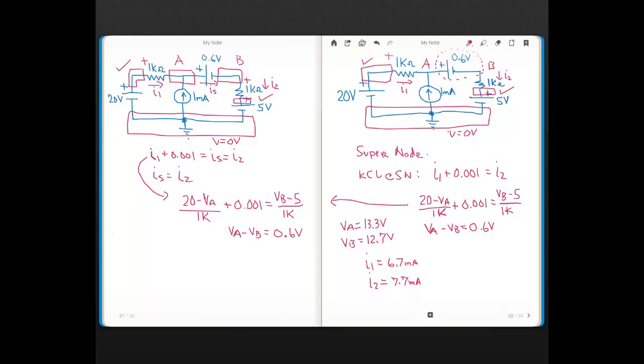So this 0.6 volt source is absorbing power, because the current is entering its higher voltage end, and also this source is absorbing, because current's flowing into the higher voltage end of the 5 volt source. The 20 volt source is supplying power, and this 1 milliamp source is also supplying power, because VA is 13.3 volts, so it's 13.3 volts higher, this node, than ground. So these two sources supplying, these two sources absorbing, and to get how many watts, supplying, absorbing, all you have to do is V times I. Okay, so that's the primary reason for this lecture was to show this concept of the super node. The next couple of videos we'll be doing more problems that involve the super node.